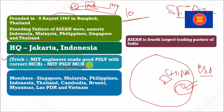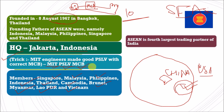When we decode these three abbreviations, we get: M as in Myanmar, I as in Indonesia, T as in Thailand, P as in Philippines, S as in Singapore, L as in Laos, V as in Vietnam, M as in Malaysia, C as in Cambodia, B as in Brunei. So all 10 countries can be remembered by the simple trick MIT, PSLV, MCB.